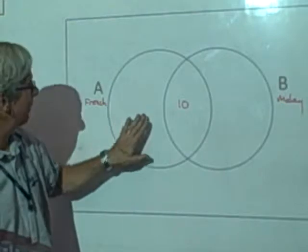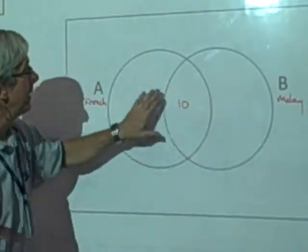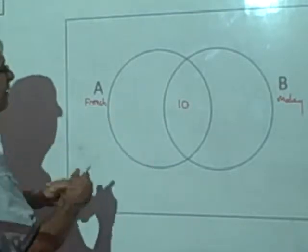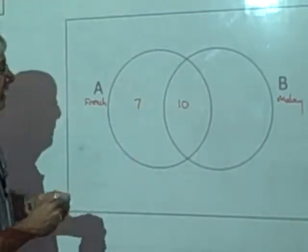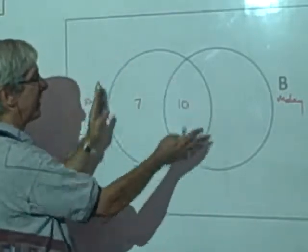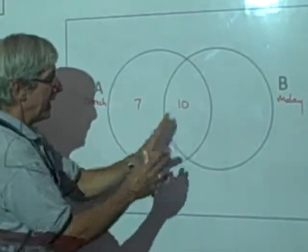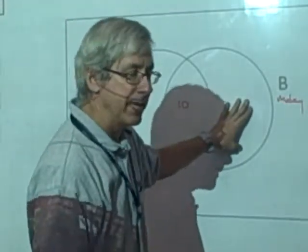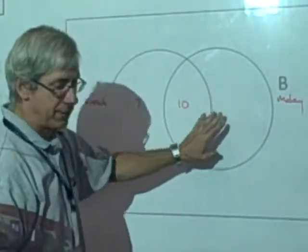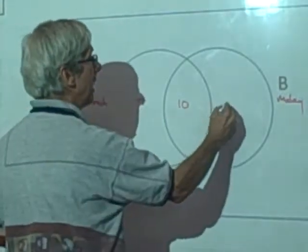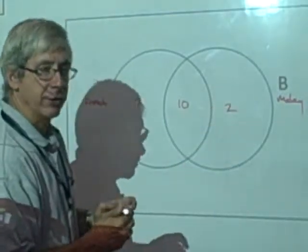Ten of the 17 speakers of French also speak Malay. Well, then that means that's ten of the 17. There must be seven left out here that speak French but don't speak Malay. So now I have 17 inside the French circle. And I have ten of them that are also inside the Malay circle. Now I want to complete the Malay circle.